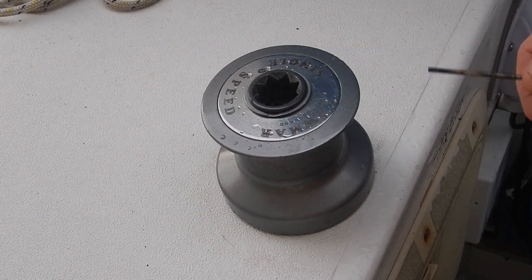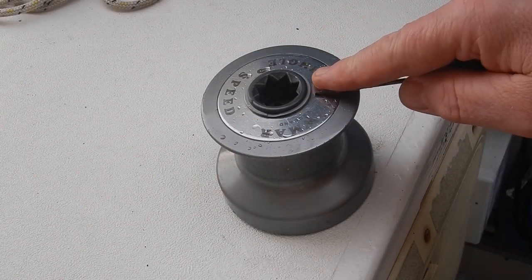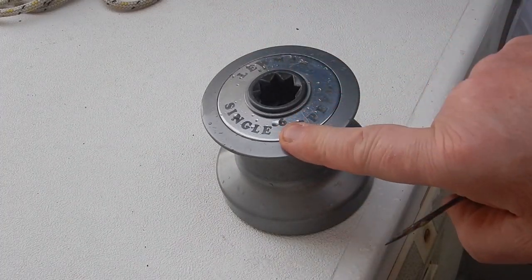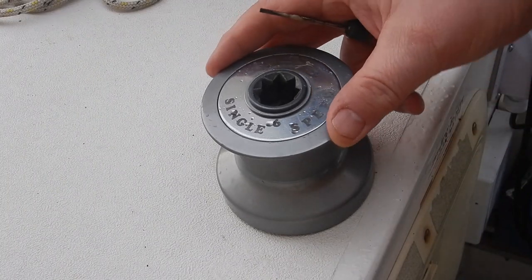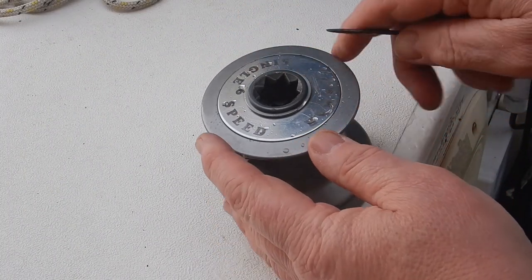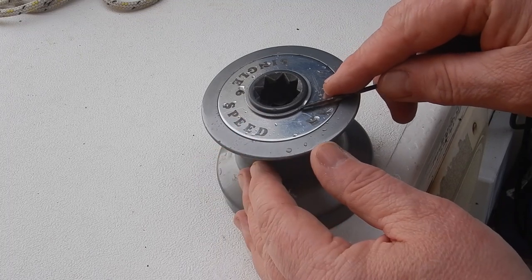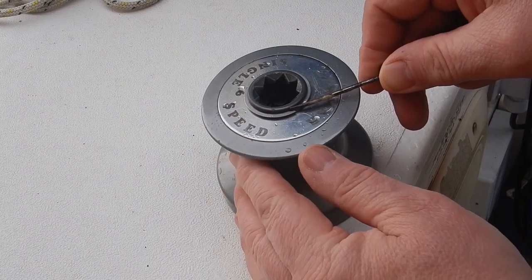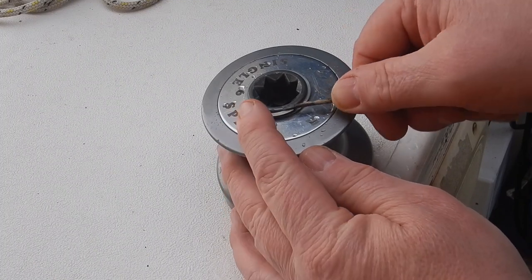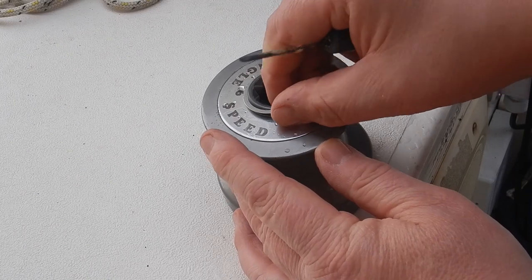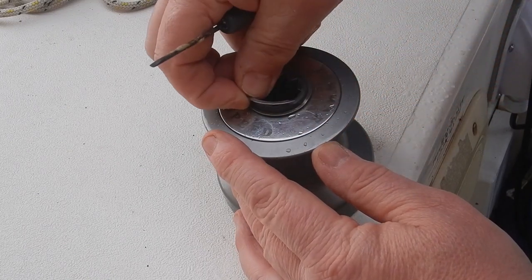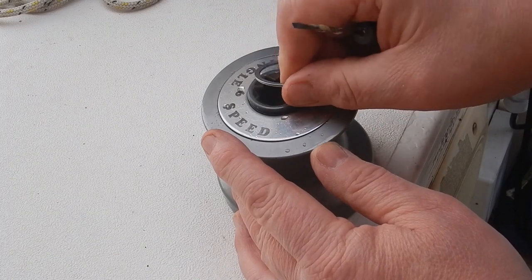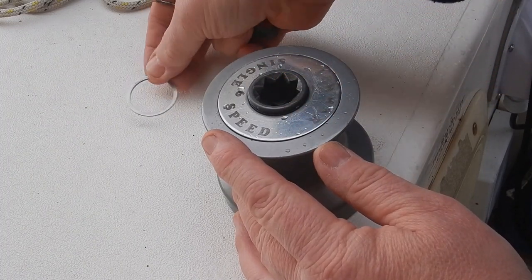We're going to take this Lumar single speed number six capstan winch apart. To start, there's a little split ring here. You need a tiny screwdriver to lever that out and up, then it comes up like that. Just twist it and hold on to it - that's one ring.